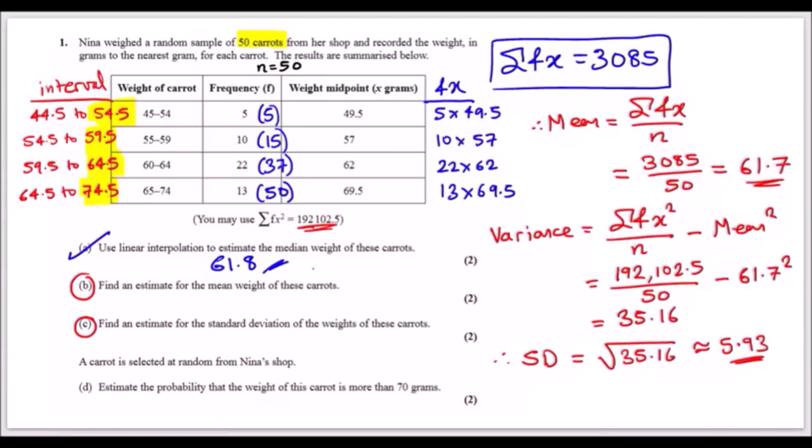For part c, we need to find the standard deviation of these weights. I usually find the variance first because you can just square root the variance to get the answer. The variance formula is the sum of fx squared over n, which is 50, minus the mean squared, so minus 61.7 squared. When you resolve that, you just square root it and voila, 5.93. These two are quite straightforward; they're just formula based. Now here comes the main part.